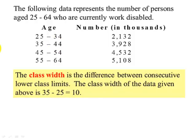The class width is the difference between consecutive lower class limits or even between consecutive upper class limits. So for example, if we take 35 minus 25, the lower limits, we get 10. If we take 44 subtract 34, we get 10. So this is how we can compute the class width.